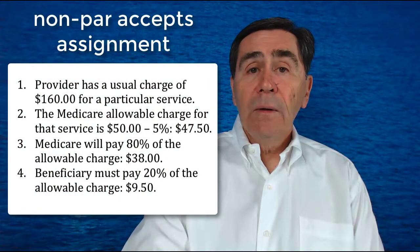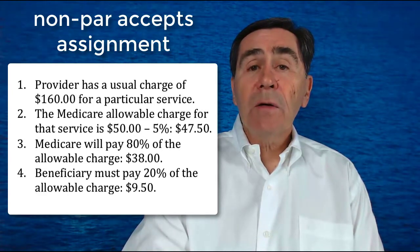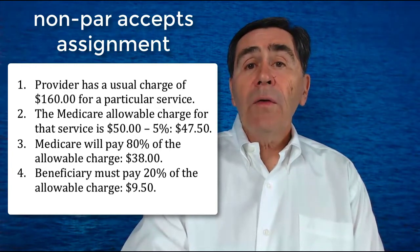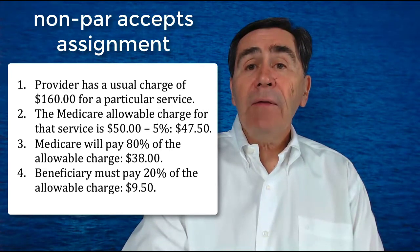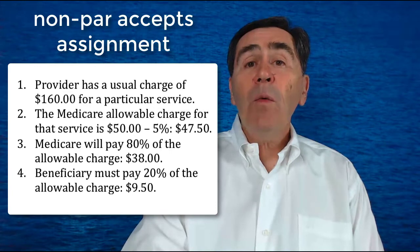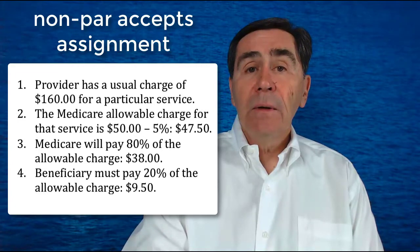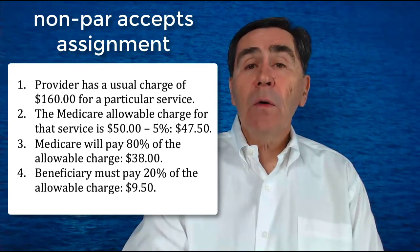Now, let's move on to a non-participating provider who accepts assignment for this claim. The provider has a usual charge of $160 for a particular service. The Medicare allowable charge for that service is $50, but we have to subtract 5% because the physician is a non-participating physician. So, the allowable charge is now $47.50. Medicare will pay 80% of this allowable charge, or $38. The beneficiary must pay 20% of this allowable charge, or $9.50.